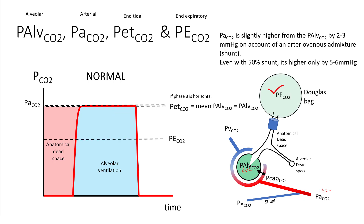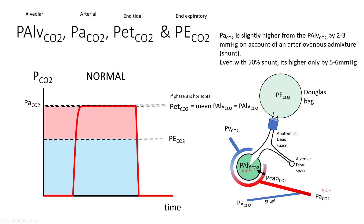The P-E CO2, your end expiratory CO2, is the average of the carbon dioxide exhaled out. So P-E CO2 is the average of CO2 in the anatomical dead space and your P alveolar CO2. The blue area represents your alveolar ventilation that has carbon dioxide, and the anatomical dead space has no CO2. If you draw a line where the area of one rectangle equals the area of the other, that horizontal line gives you P-E CO2.